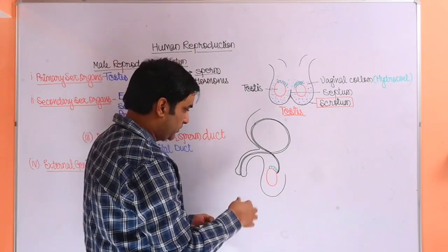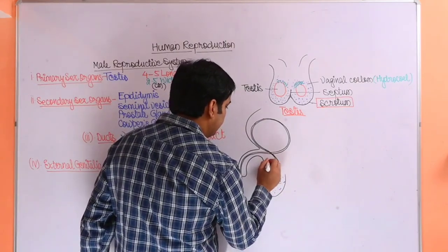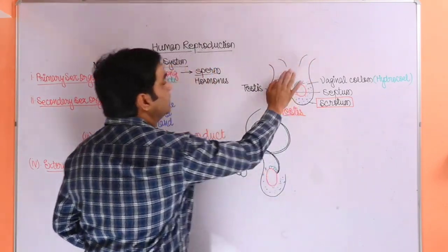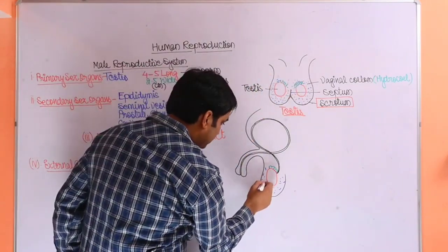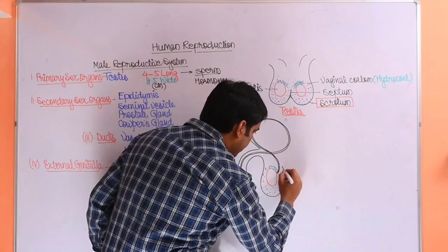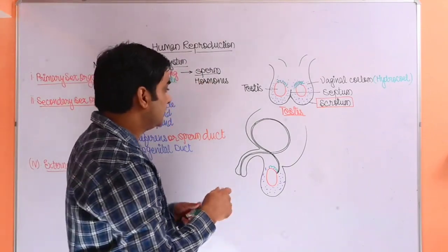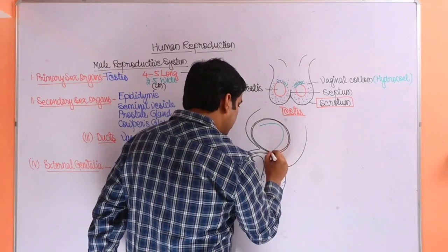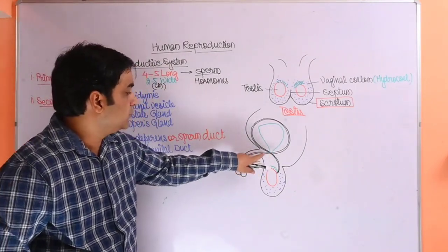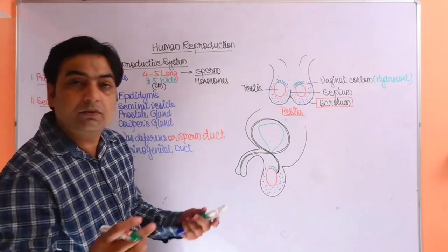This is a tubular structure, the vas deferens or sperm duct. This is the scrotum into which the testis is present. This is the structure of penis I have made. A fluid is present into it. This structure is reaching up to here, and afterwards part will be there in the body. This is the urinary bladder which opens here. This part is urinogenital duct where sperm and urine are meeting together.